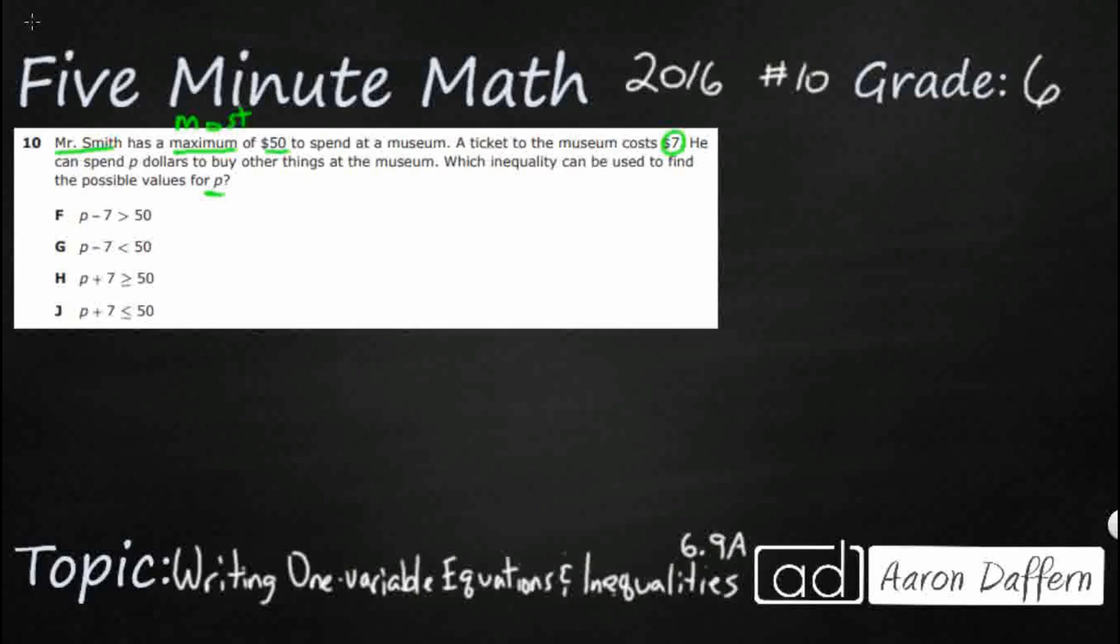Well, let's go ahead and take that 50 dollars and take away the 7. So let's just see how much money he actually has. So he's got 50 bucks total. He knows that he's going to have to get rid of 7 just to get into the museum. So that's going to leave him with 43.